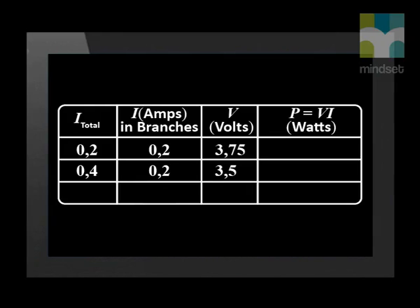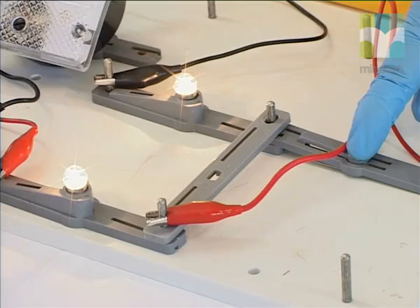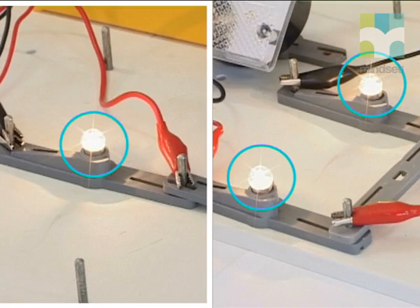Let us now add these values to our table. The ammeter reading in the main circuit has gone up. However, the current in the branches remains the same and is the same in both branches. We should have expected this because we know that resistors in parallel are current dividers. If we put the images of one bulb next to the image of two bulbs, we can see that the light bulbs have exactly the same brightness.